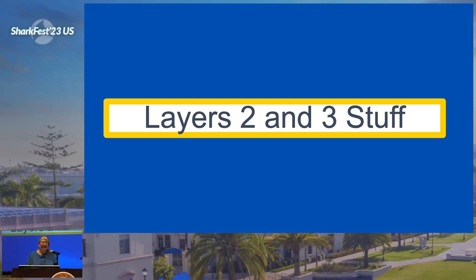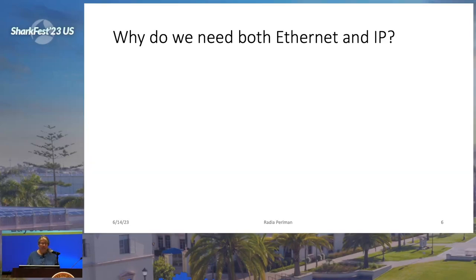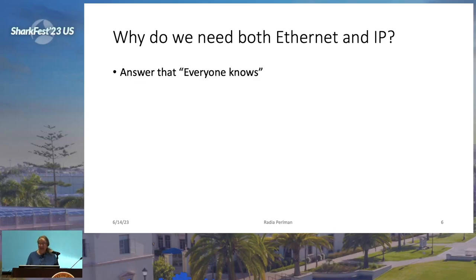It's natural to think of standards bodies as well-educated technologists carefully weighing engineering trade-offs, but a much more accurate way to think of them, I claim, is as drunken sports fans — rah rah, my team. So, layer two and three stuff: why do we need both Ethernet and IP? Networking experts will say, oh, that's easy — everyone knows that IP is layer three and Ethernet is layer two. See? Answered.